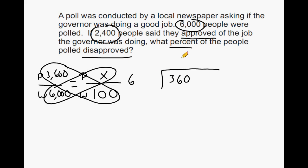Six goes into 36 six times and we can just write a zero here. So we would say the percentage of people who disapproved is equal to 60%. Which means 40% of the people approved of the job the governor was doing.